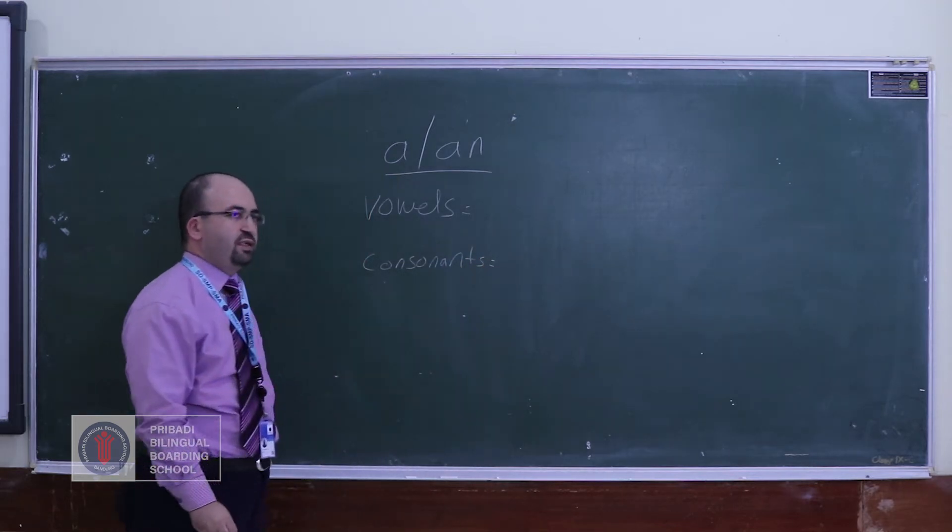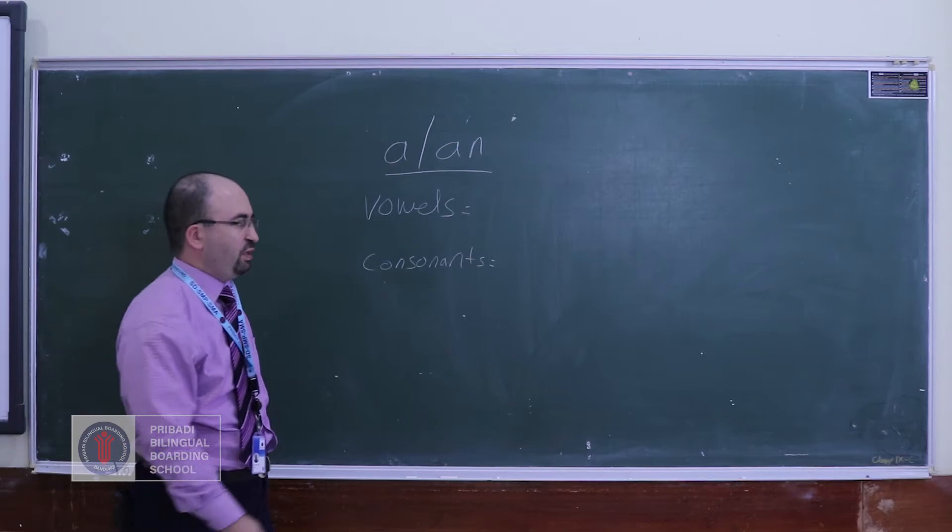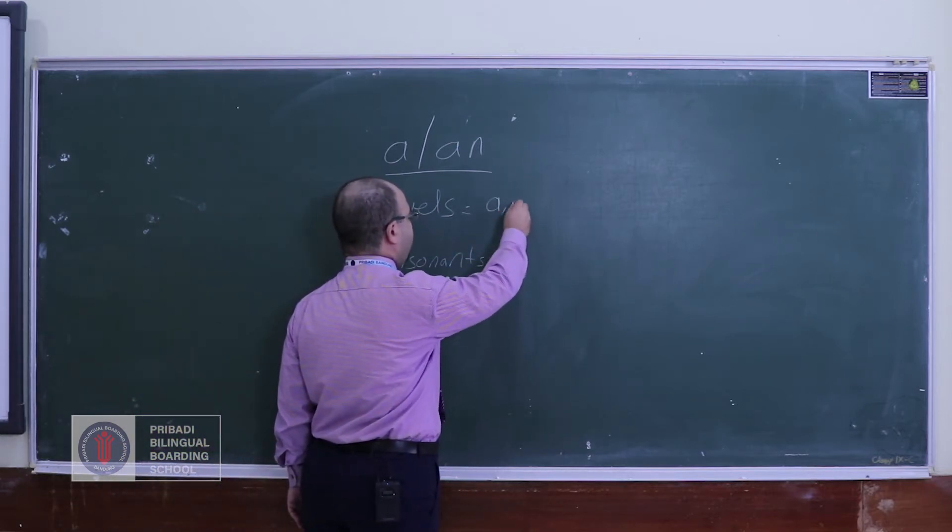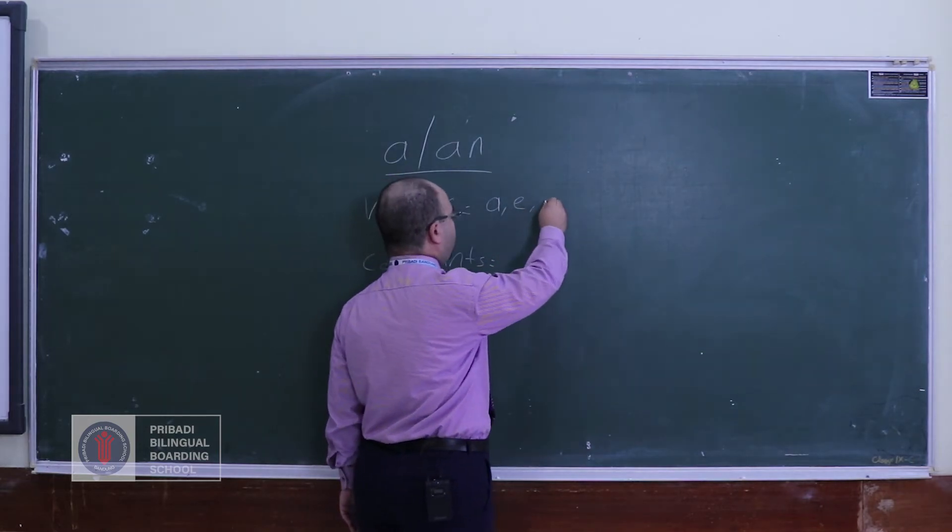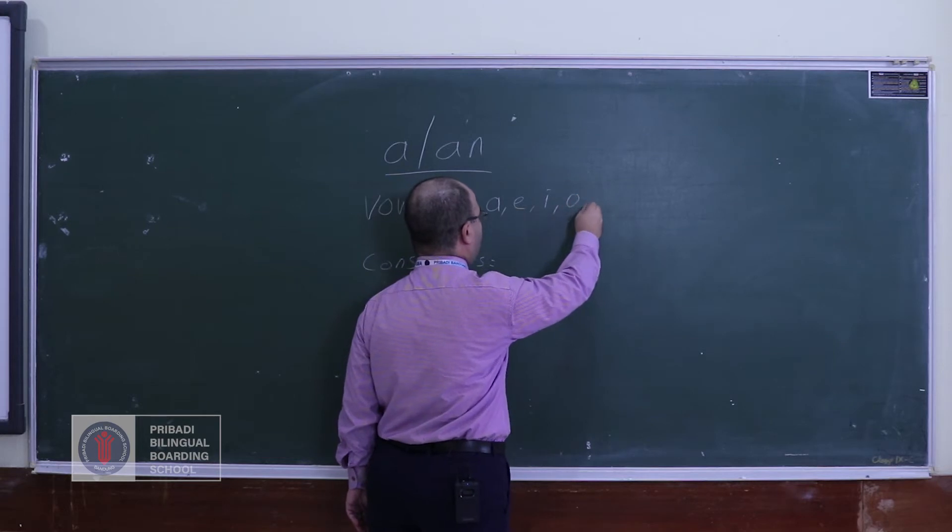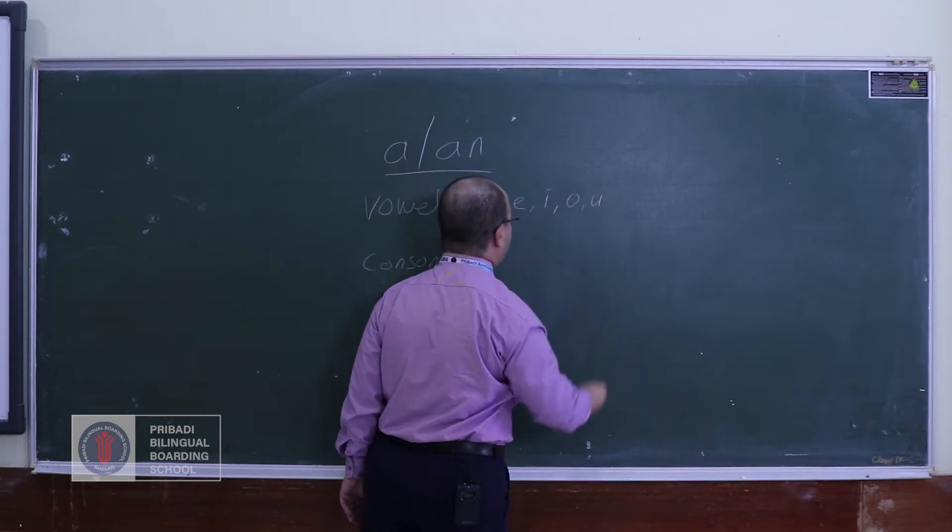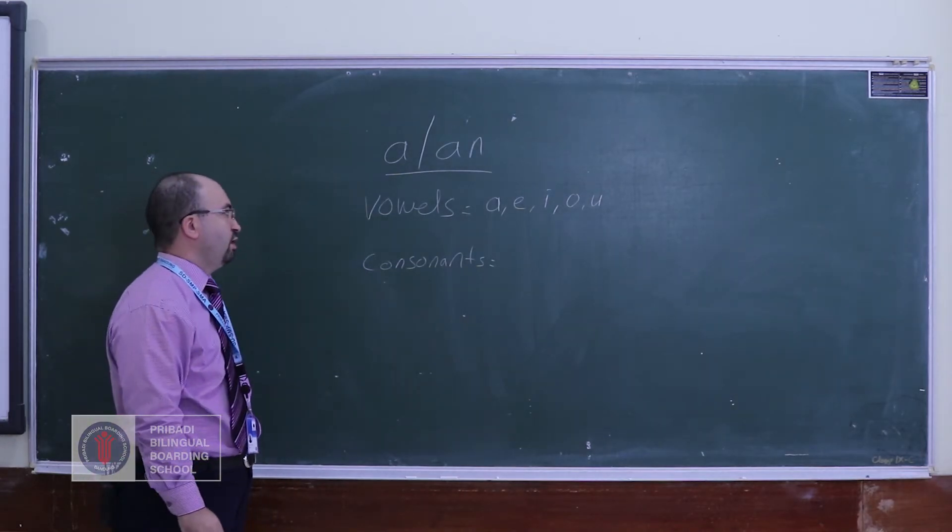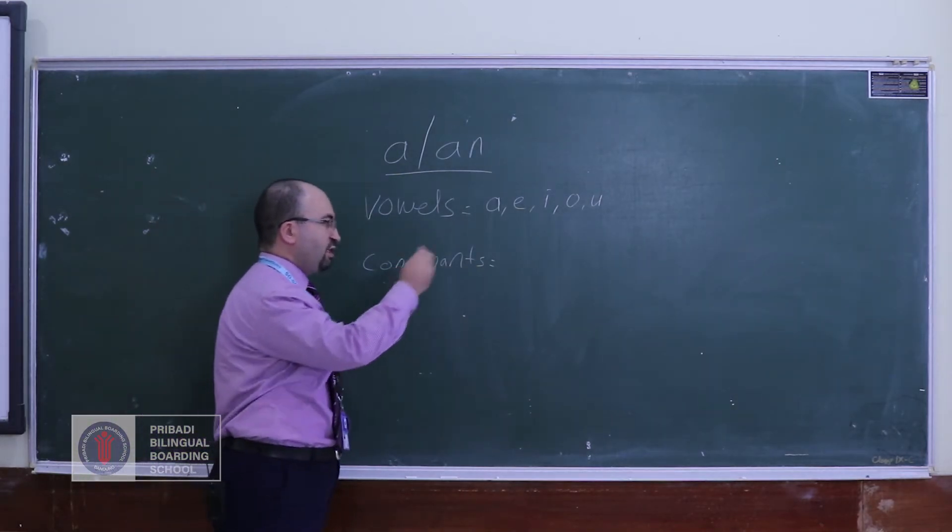Vowels are the letters in the alphabet. Which letters are there? One is a, second is e, third one is i, fourth is o, and the fifth is u.